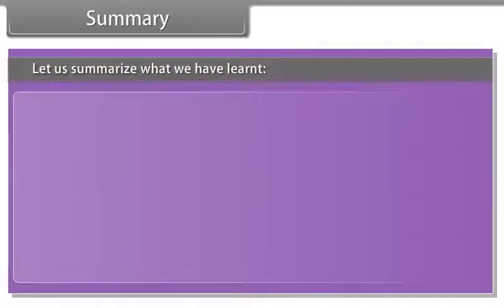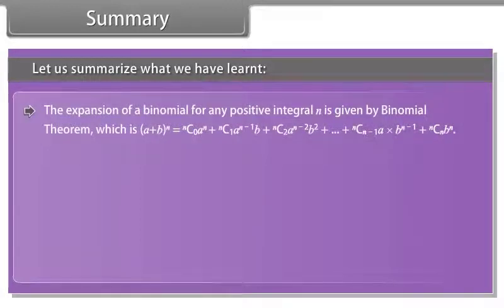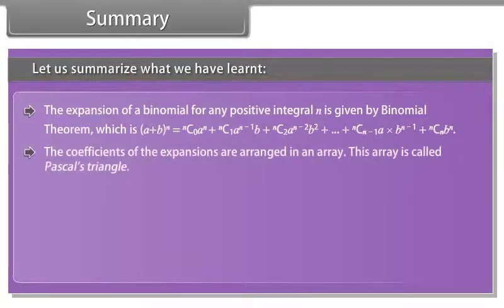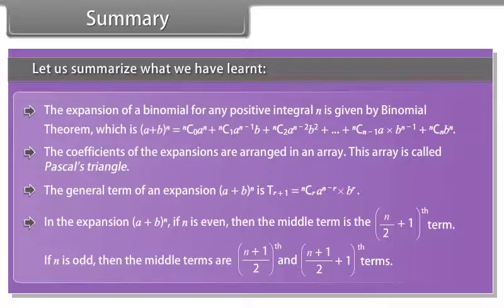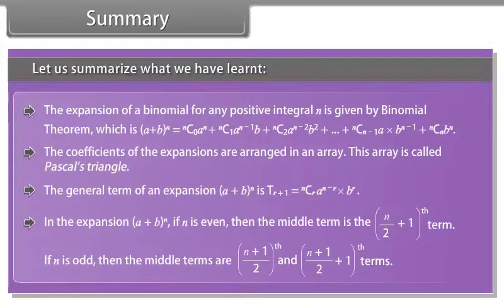Summary: Let us summarize what we have learned. The expansion of a binomial for any positive integral n is given by the binomial theorem. The coefficients of the expansions are arranged in an array called Pascal's triangle. The general term of an expansion is t(r+1). In the expansion of (a plus b) raised to power n: if n is even, the middle term is the (n/2 plus 1)th term; if n is odd, the middle terms are the (n+1)/2 th and (n+1)/2 plus 1 th terms.